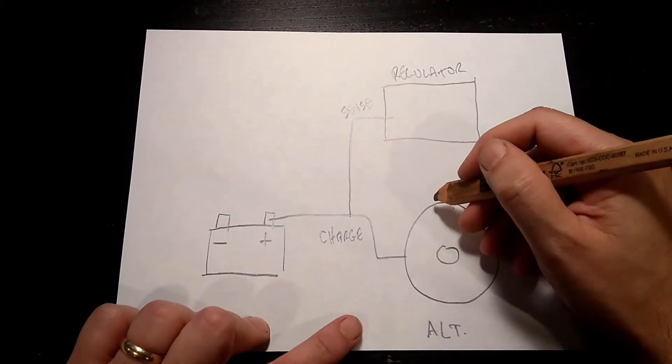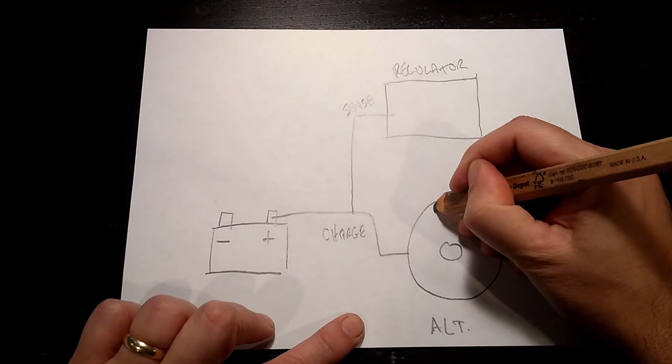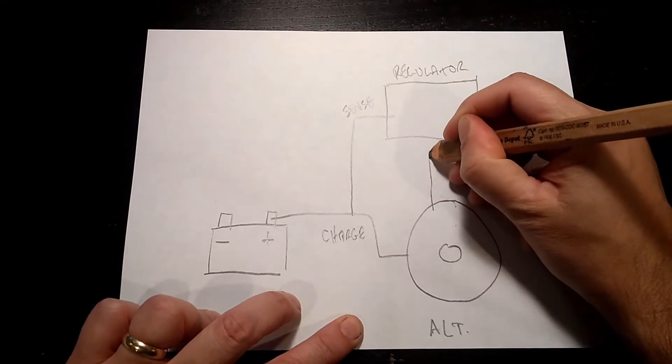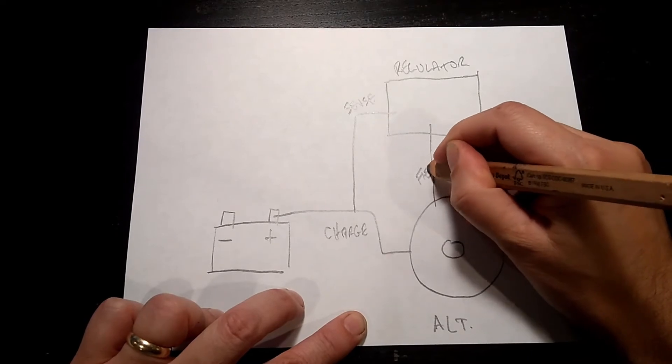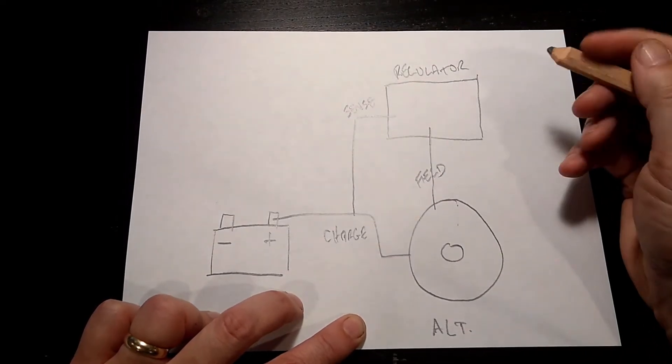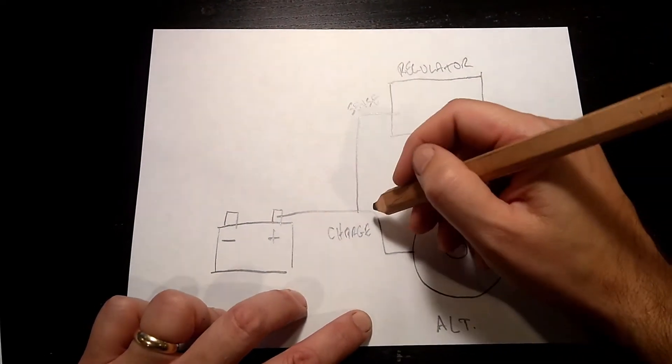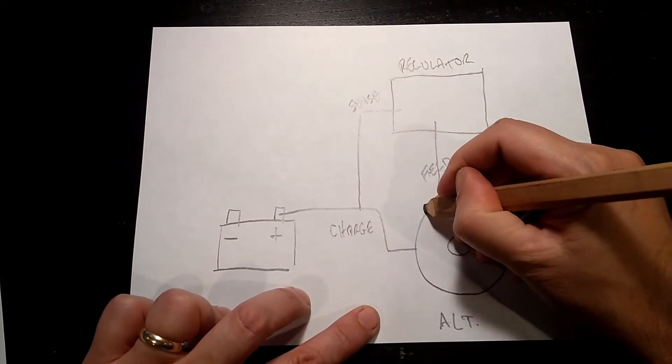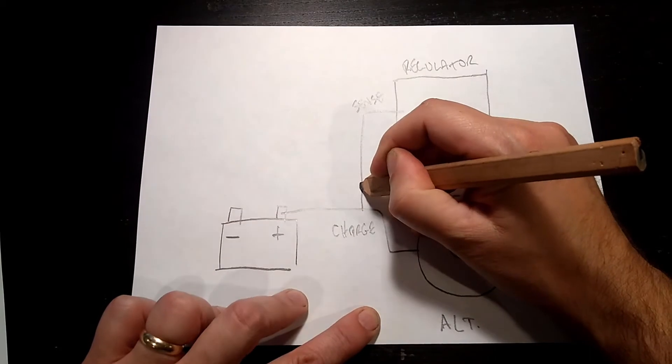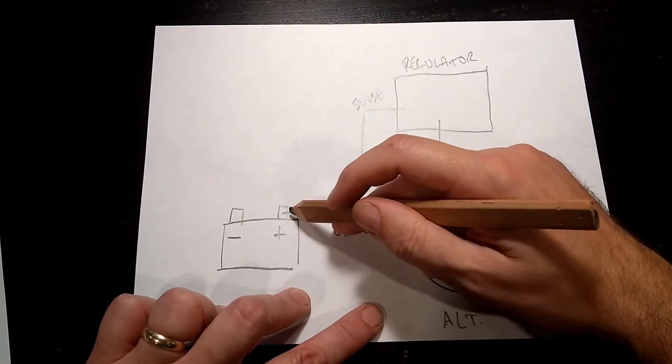Then we have a wire that comes out of the alternator. This is a field wire. And then another wire from the alternator that also connects in to this positive.